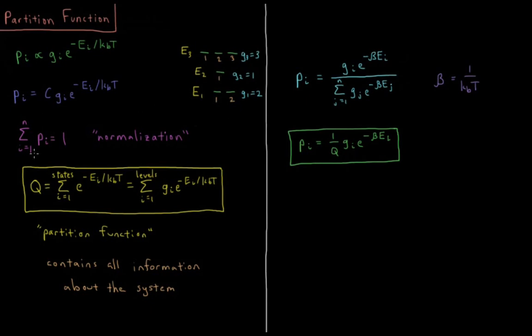One concept we can use here is probability normalization. Each of these probabilities is a fraction of what likelihood occurs in that state. All the probabilities together should sum up to 100%, or one, meaning there's a 100% chance that the system is in a certain state. The sum from energy level equals one all the way up to n energy levels of the probability of each energy level should equal one. That's called normalization.